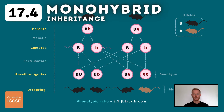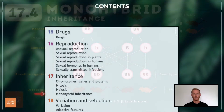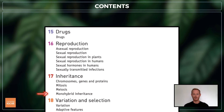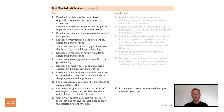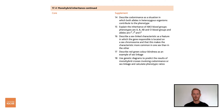Hello and welcome to another complete Cambridge IGCSE biology lesson, where you'll learn absolutely everything you need to know on topic 17.4, Monohybrid Inheritance. We'll be following the Cambridge syllabus exactly, and we'll cover absolutely everything you need to know for your final exam.